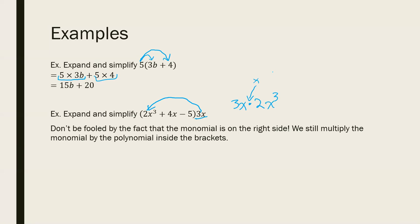When you see that dot, it represents multiplication. Another way to represent multiplication is using brackets, so 4 times 5 with brackets, or using a traditional cross. But when I work with variables, I tend to avoid the cross symbol and just use the dot. So here we're going to multiply 3x by 2x cubed, which means we multiply the numbers together to get 6, and then we still have x multiplied by x cubed.